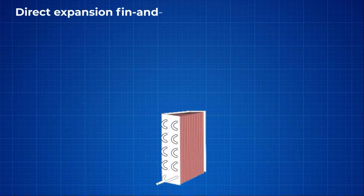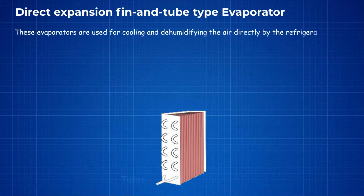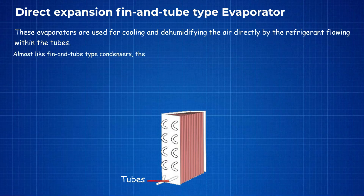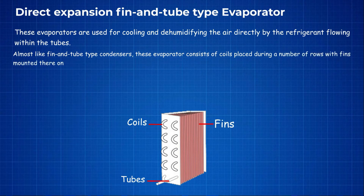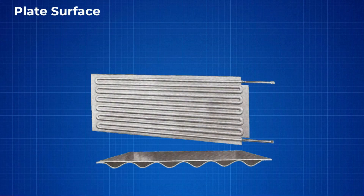Direct expansion fin and tube type evaporators are used for cooling and dehumidifying air directly by the refrigerant flowing within the tubes. Similar to fin and tube type condensers, these evaporators consist of coils placed in a number of rows with fins mounted on them to extend the heat transfer area. Tubes with individual spiral straight fins or crimped fins are welded and are utilized in some applications like ammonia.